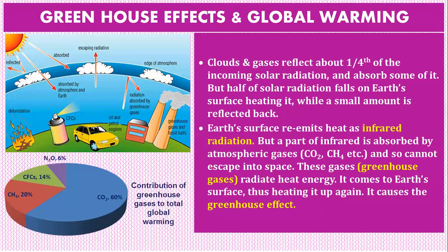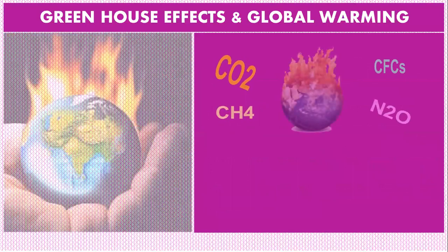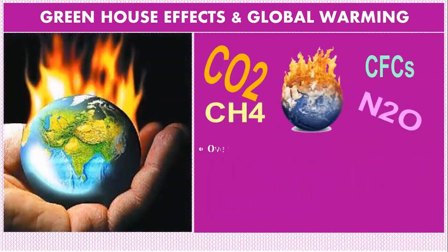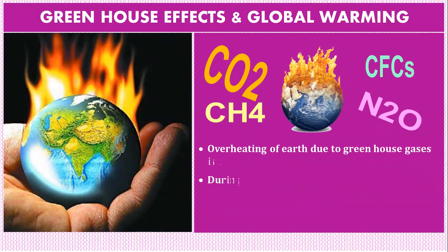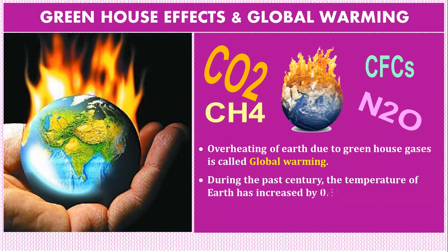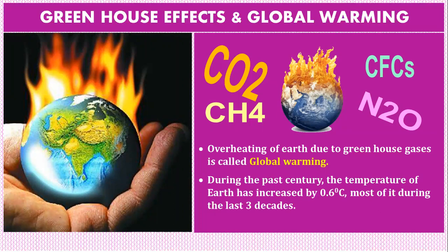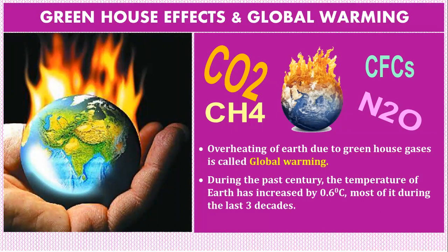A pie chart shows the contribution of greenhouse gases to total global warming. The major contributor is carbon dioxide, followed by methane, then CFC, and then N2O. These are the gases responsible for global warming. Global warming is the overheating of Earth due to greenhouse gases. During the past century, Earth's temperature has increased by 0.6 degrees centigrade, most of which occurred in the last three decades.